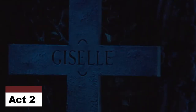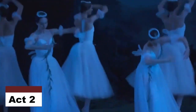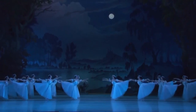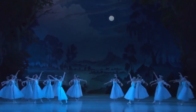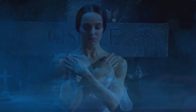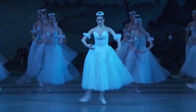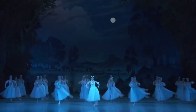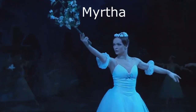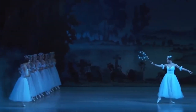In the second act of Giselle, the story takes a supernatural turn and it's a true testament to the power of the human imagination. We open on the same beautiful meadow, but this time it's bathed in moonlight and the atmosphere is eerie and otherworldly. We learn that Giselle has become a Wili — a spirit of the dead who haunts the forest. The Wilis are the spirits of young women who have died before their wedding day, and they are doomed to dance until they can claim a living partner to join them in death. They are led by their queen, Myrtha, who welcomes Giselle as one of their own.